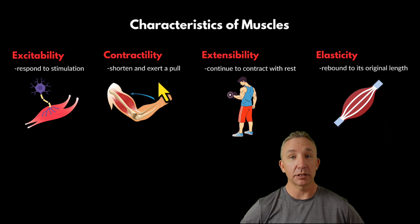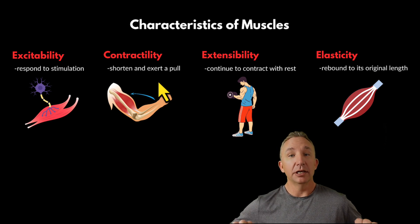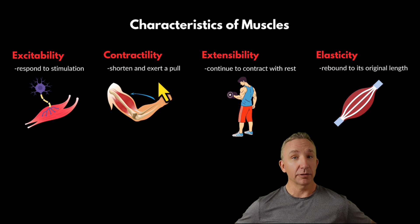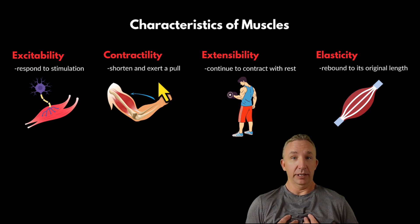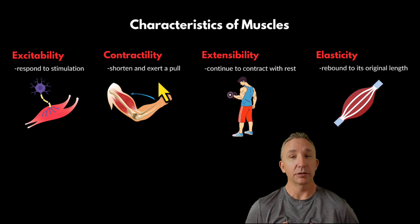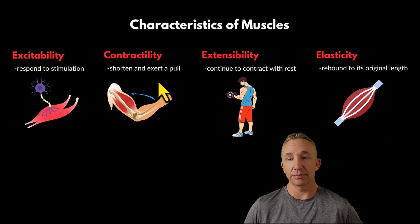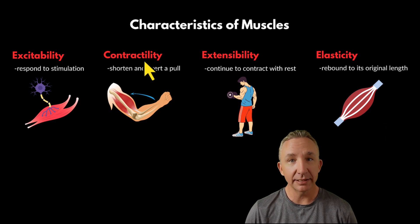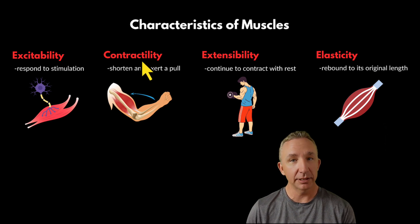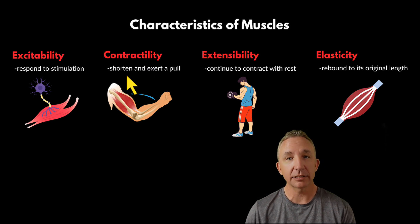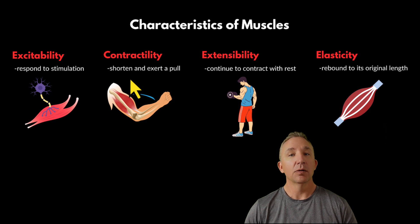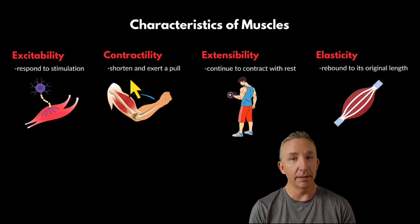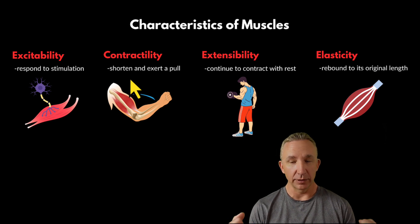Even when we do push-ups — you are pushing your body up — but the force you're creating within the pectoralis major is shortening the muscle. You can feel that when you do push-ups. So contractility is the ability to contract, but what are we actually doing? We're shortening the muscles to create that force.